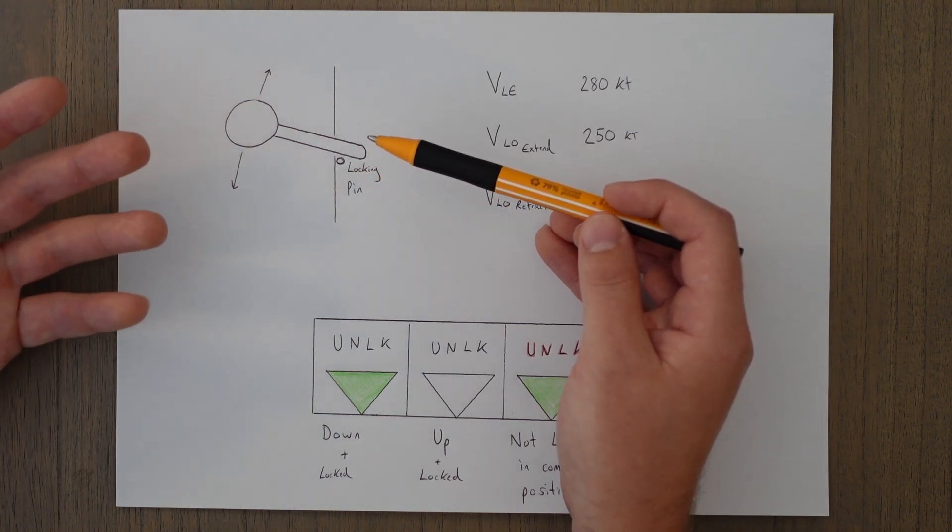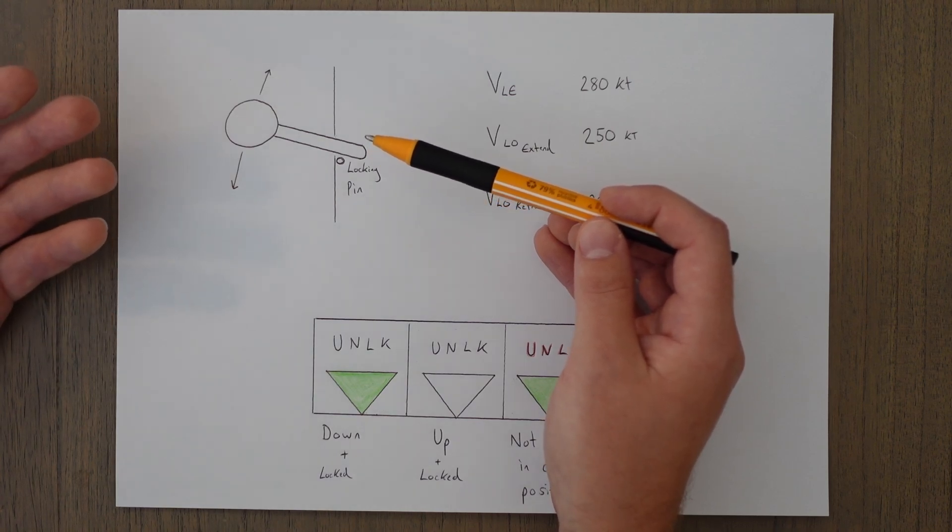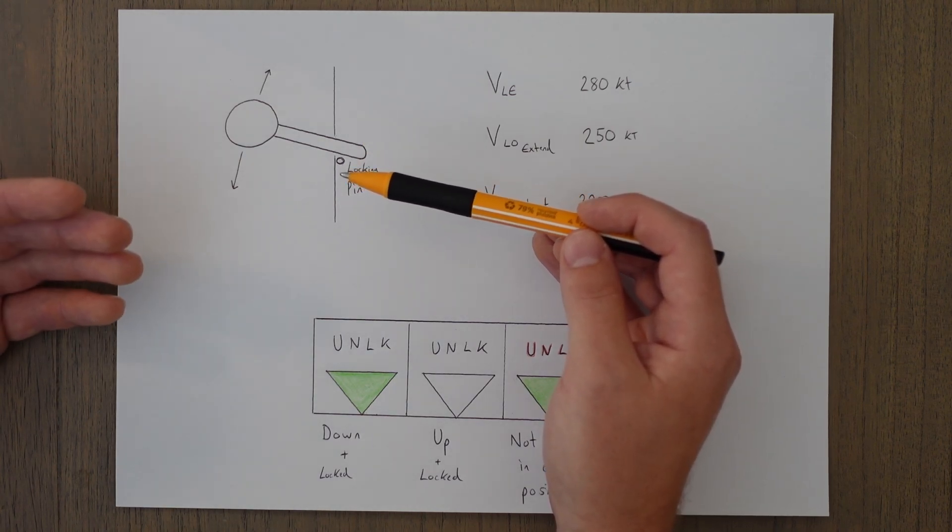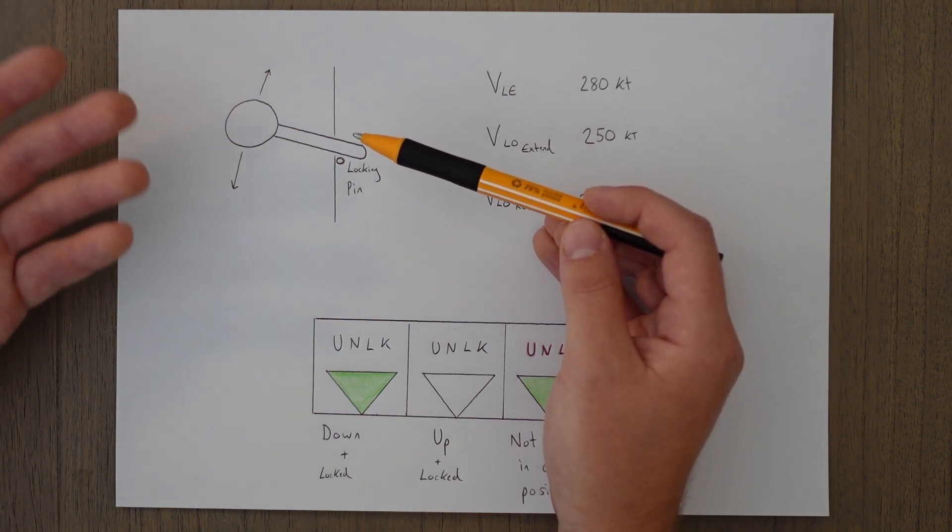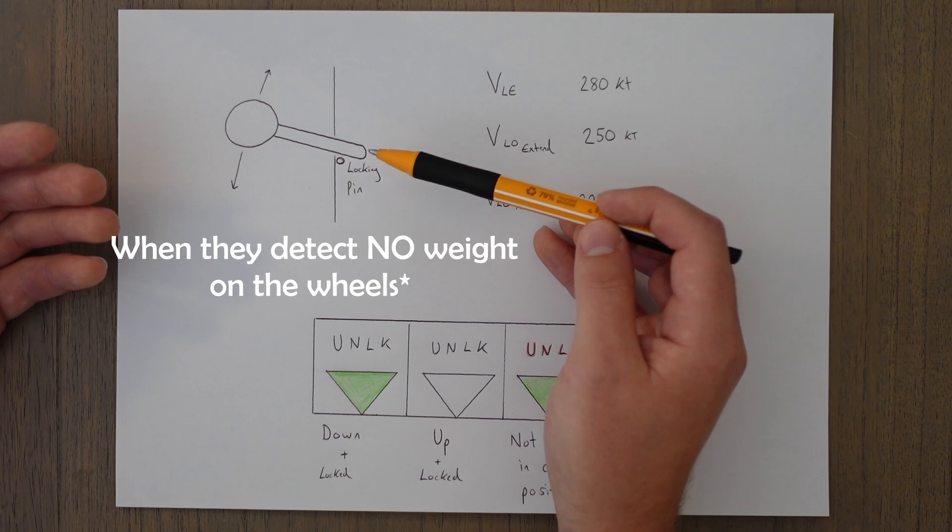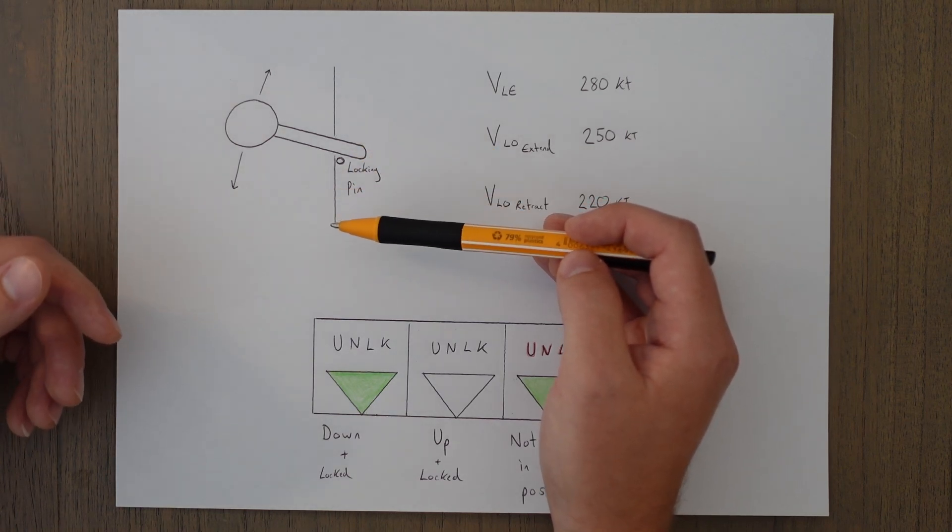In large jets though, we want some systems to operate only on the ground, like the thrust reversers on the engines, for example. We also only want to be able to extend and retract the landing gear when in the air, which is where the weight on wheel switches come in. When they detect weight on wheels, then the physical lock, the locking pin, will unlock, and it means that we can move the landing gear up and down.